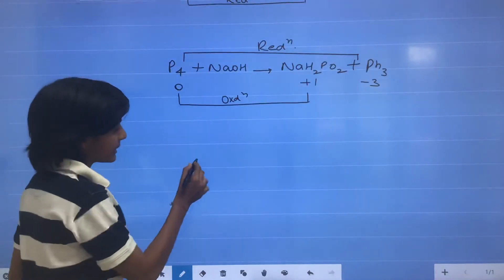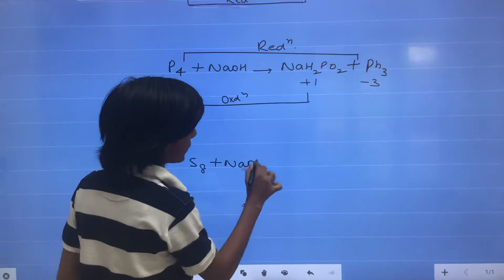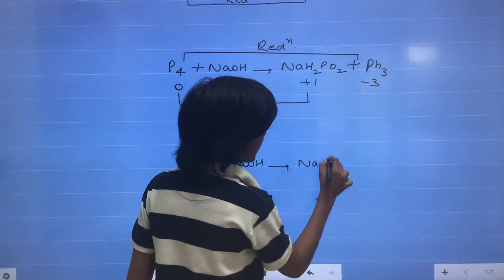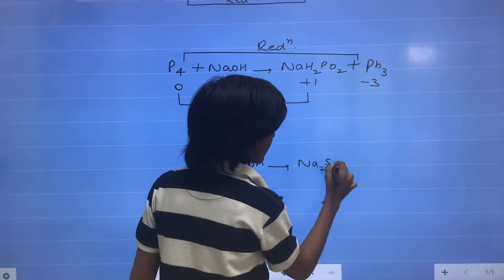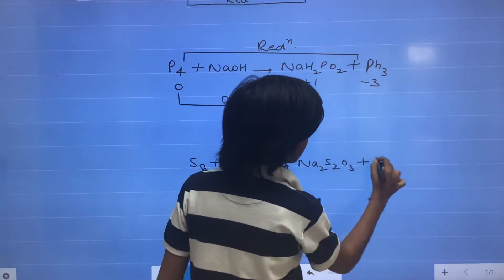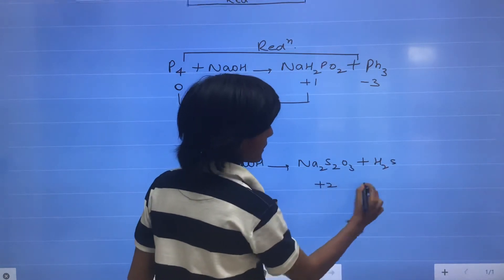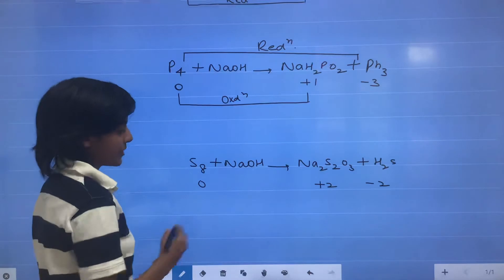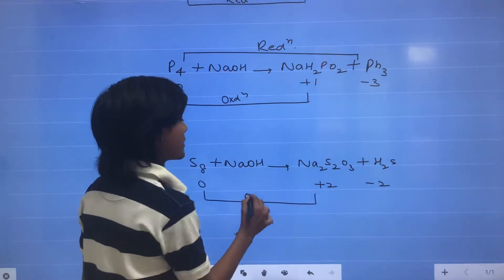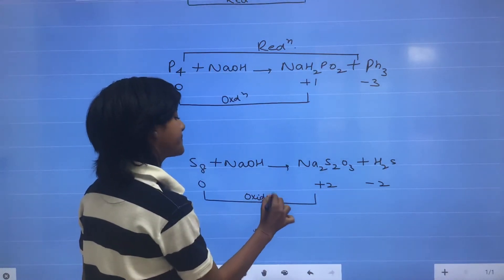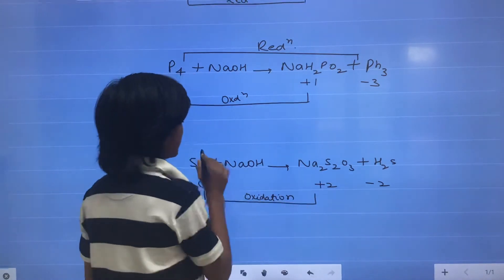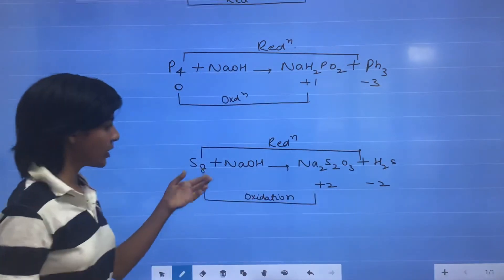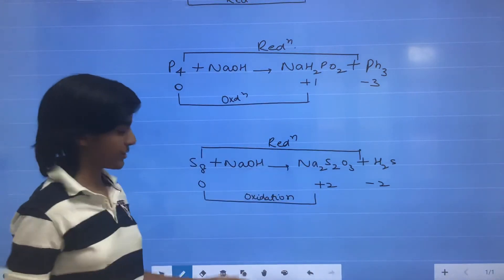Similarly, when S8 reacts with NaOH, it forms Na2S2O3 plus H2S. The oxidation state of S in S8 is 0, in Na2S2O3 it is plus 2, and in H2S it is minus 2. So again there is an increase in oxidation state — oxidation — and a decrease in oxidation state — reduction. This means the same element undergoes both oxidation and reduction.